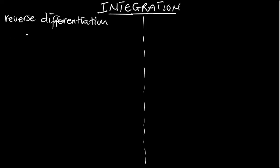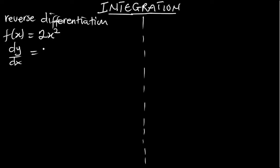If we differentiate, we can reverse the equation by doing integration. When we integrate, we start with derivatives and find the expression from which it has been derived. For example, if f(x) equals 2x squared and I differentiate this expression, I'm going to get 4x. So now, what if I'm told to get back the equation that gave me this derivative? That's where we introduce integration. When I integrate the derivative, it will send me back to the original expression.